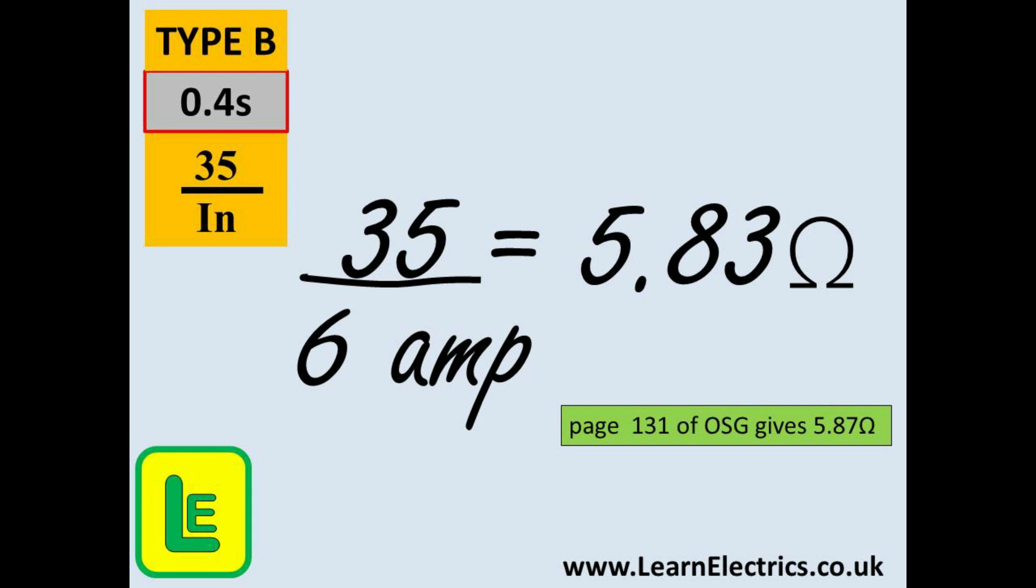In this example we will use a 6 amp type B circuit breaker. 35 divided by 6 will give us 5.83 ohms. You will need a calculator for this and do not be afraid to write down your calculations. If you get a wrong number you can quickly trace your mistake. Look at the table B6 in the blue on-site guide. In my book it is on page 131. The on-site guide gives a maximum ZS value of 5.87 ohms. And I think you will agree that we are pretty much there with the value that we have just calculated. Nobody is going to fuss over 4 one hundredths of an ohm.